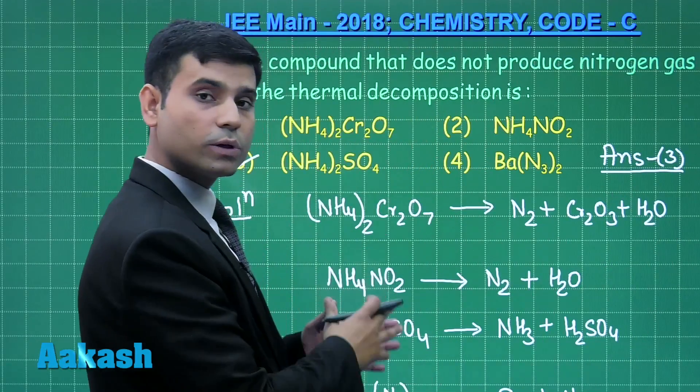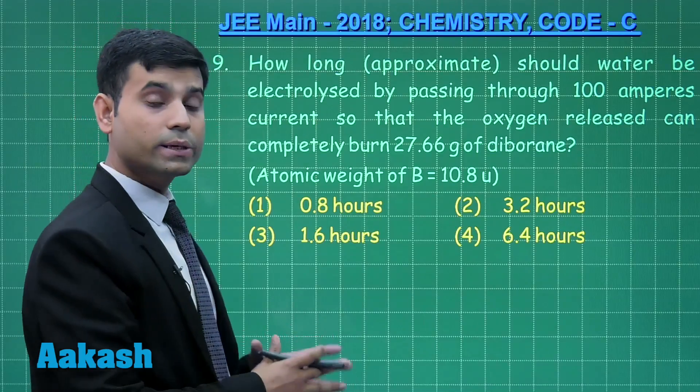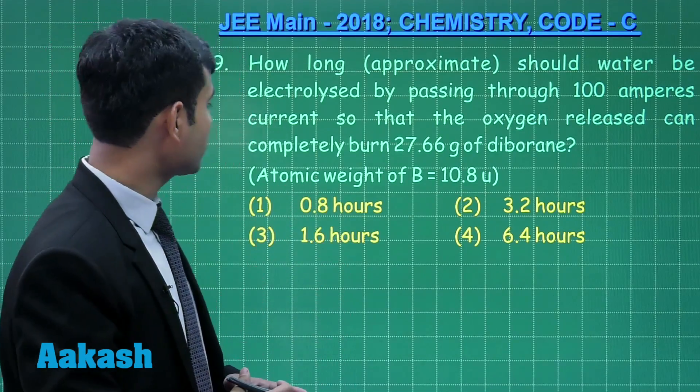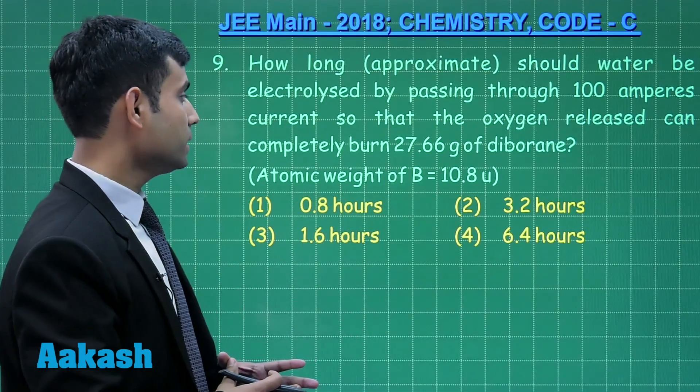Now, let us move to the next question. The next question is question number 9, which says how long approximately should water be electrolyzed by passing through 100 ampere current so that the oxygen released can completely burn 27.66 gram of diborane.